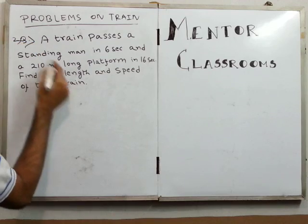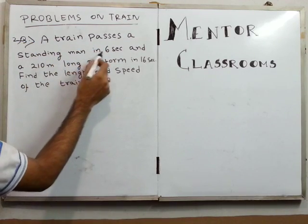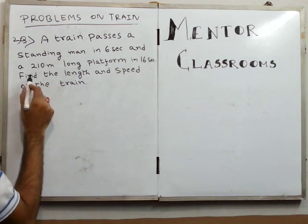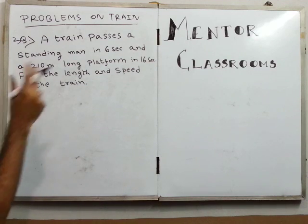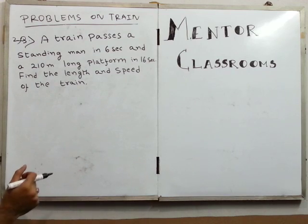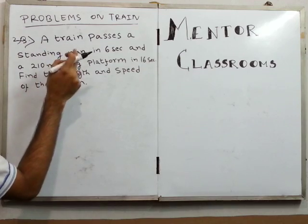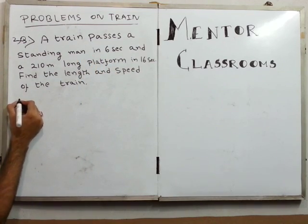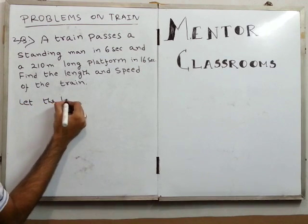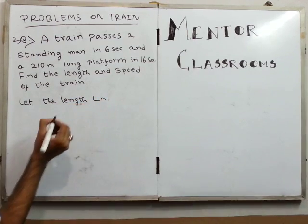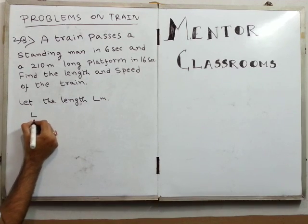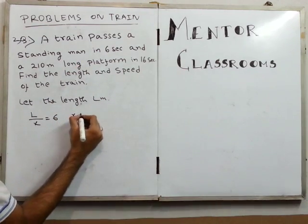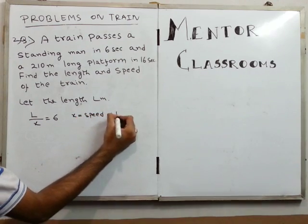Our last problem: a train passes a standing man in 6 seconds and a 210-meter long platform in 16 seconds. Find the length and speed of the train. This is a nice problem where both concepts are merged. When a train passes a man it crosses its own length, and when it crosses a platform it crosses the length of the train plus the platform. Let the length of the train be L meters. We frame our first equation as L divided by x equals 6, where x is the speed of the train.